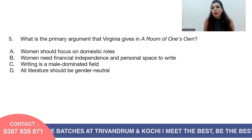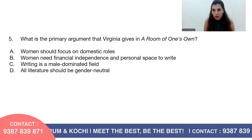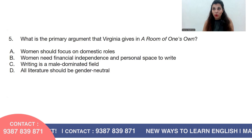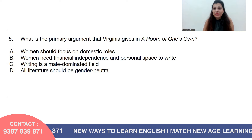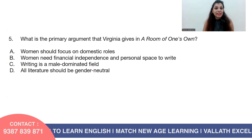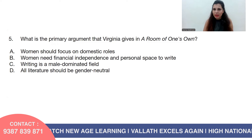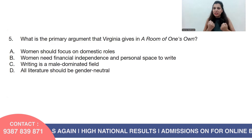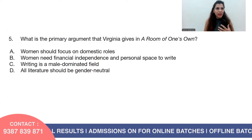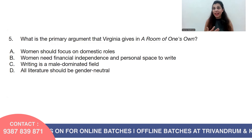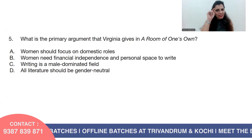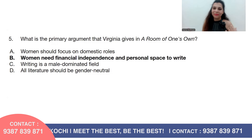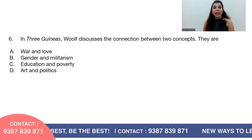Question number five: What is the primary argument Virginia Woolf makes in A Room of One's Own? Option A, women should focus on domestic roles; option B, women need financial independence and personal space to write; option C, writing is a male-dominated field; or option D, all literature should be gender neutral. The correct answer is B — a woman needs financial independence and a room of one's own with a lock, to write.